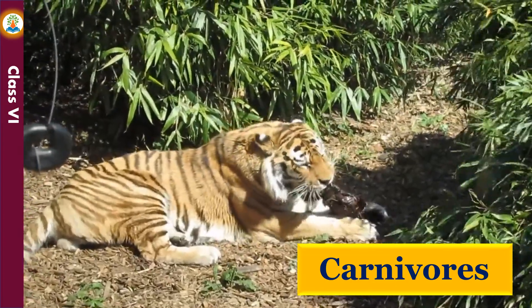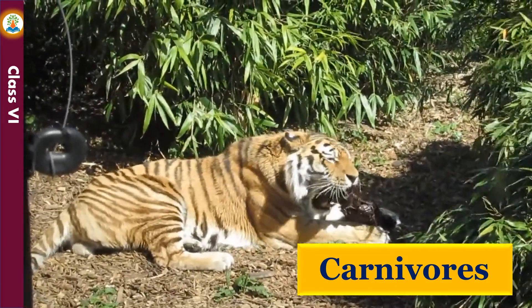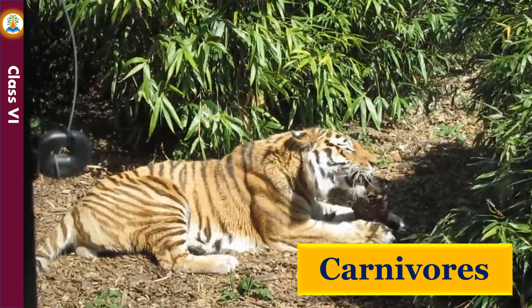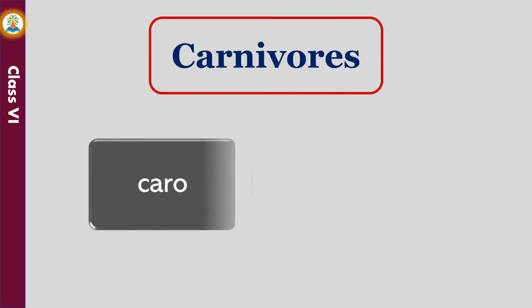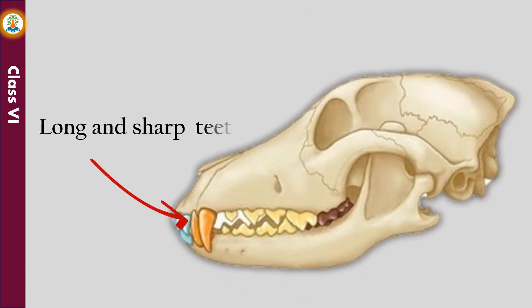Animals that eat only other animals are called carnivores, also known as flesh-eating animals. In Latin, 'caro' means meat or flesh. They have long and sharp teeth for tearing the flesh of animals.